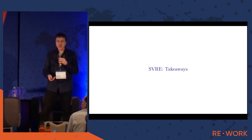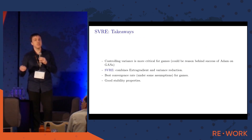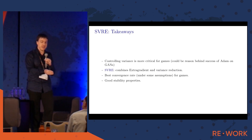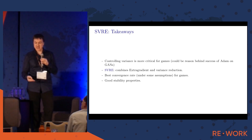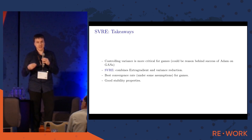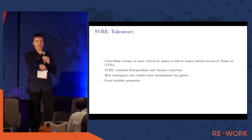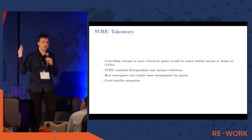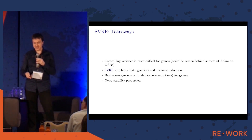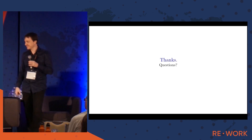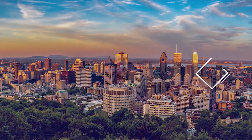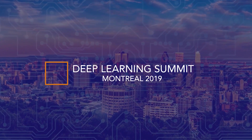In conclusion: noise is more problematic for games than for minimization, which is why we propose combining the extragradient method with variance reduction. In theory, this achieves the best convergence rates, and empirically it shows good stability properties. I think if groups with large computational infrastructure, like at DeepMind — where the two first authors are currently doing internships — could test this method at scale, we might get even better results. Thank you.